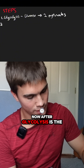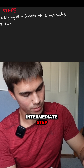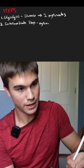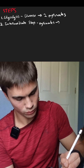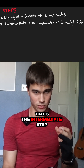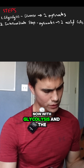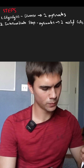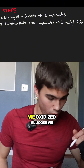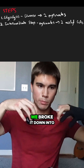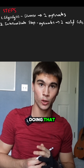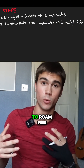After glycolysis is the intermediate step. The intermediate step involves taking those pyruvates and turning them into two acetyl-CoAs. That is the intermediate step. With glycolysis and the intermediate step, we're oxidizing our glucose molecule. We oxidize glucose — we stripped it, we broke it down into two pyruvates. In the process of doing that, we allowed some electrons to roam free.